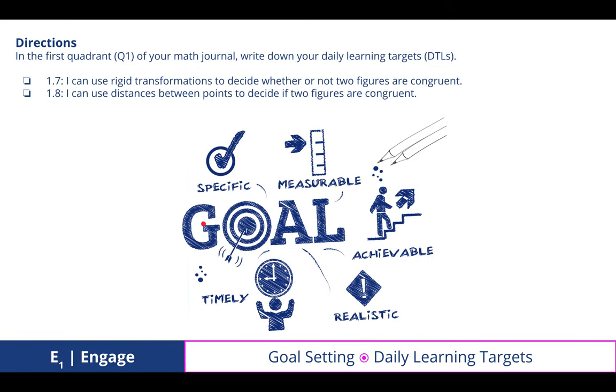In the first quadrant of your math journal, write down your daily learning targets. We have the 1.7 I can use rigid transformations to decide whether or not two figures are congruent and 1.8 I can use distances between points to decide if two figures are congruent.